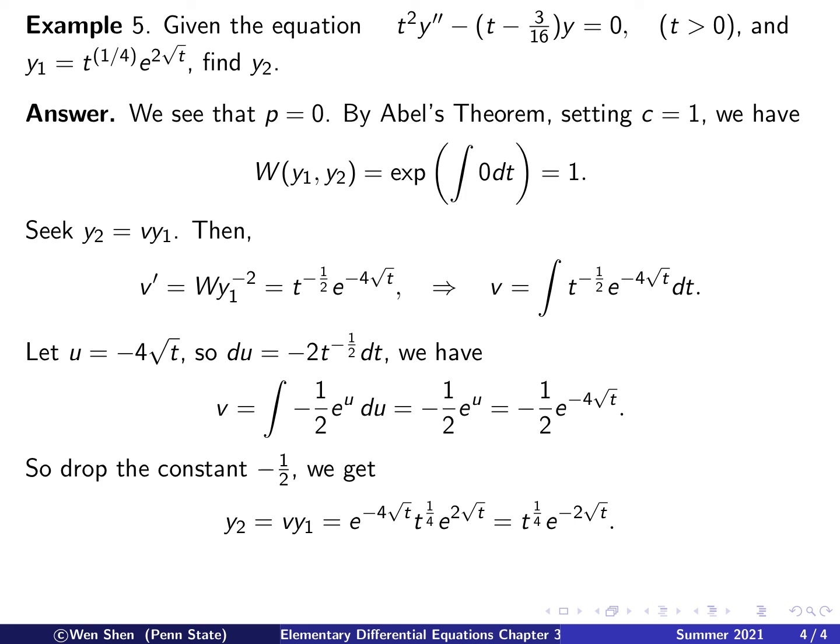We can now drop this constant, we know it doesn't matter, and then can write it into a simpler form. Y2 is v times Y1, and this is the v, and this is Y1. And then you put them together, and then you can simplify the exponential terms, combine them. This is -4, this is 2, you'll get -2. And t to the power 1/4.